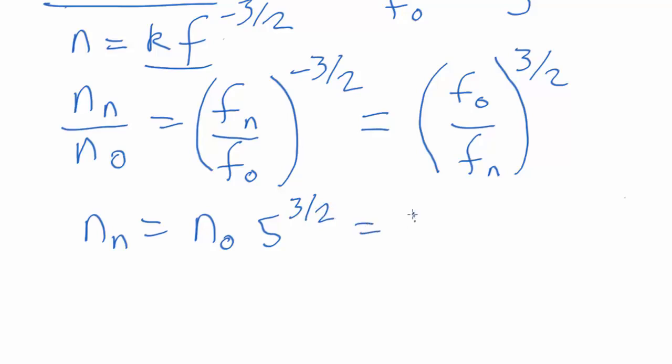So that's equal to 1000, the number of things found in the old survey times 11.18, which is 11,180 quasars expected in the new survey.